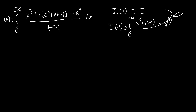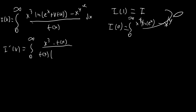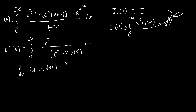Now we just need to calculate I'(v). The great thing about I'(v) is that by the chain rule we're going to end up canceling the f(x) on the bottom, and this entire term is just going to disappear. So I'(v) is going to equal the integral from 0 to infinity of x cubed times f(x) over f(x), times e to the x plus v·f(x) — and of course the f(x)'s cancel. We know that f'(x) equals f(x) minus x cubed over 6, so this tells us that x cubed equals 6 times (f(x) minus f'(x)).